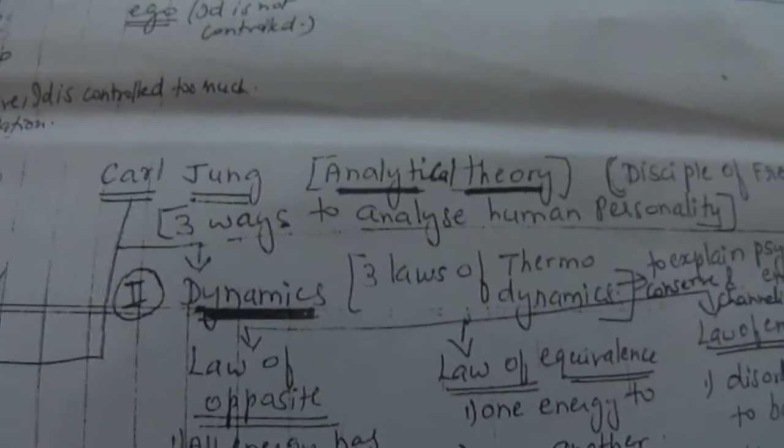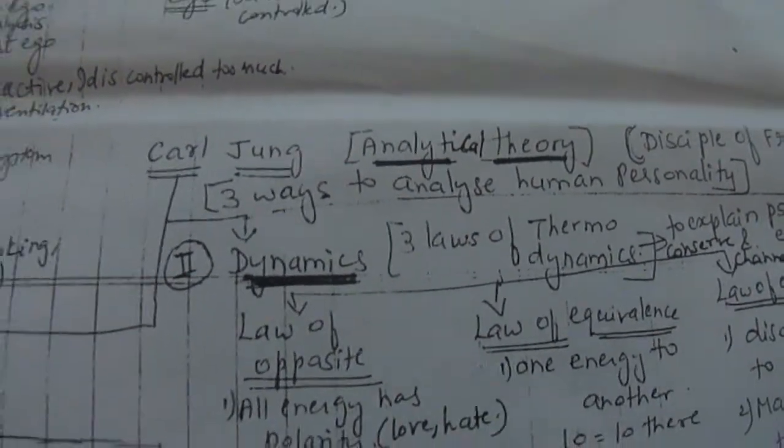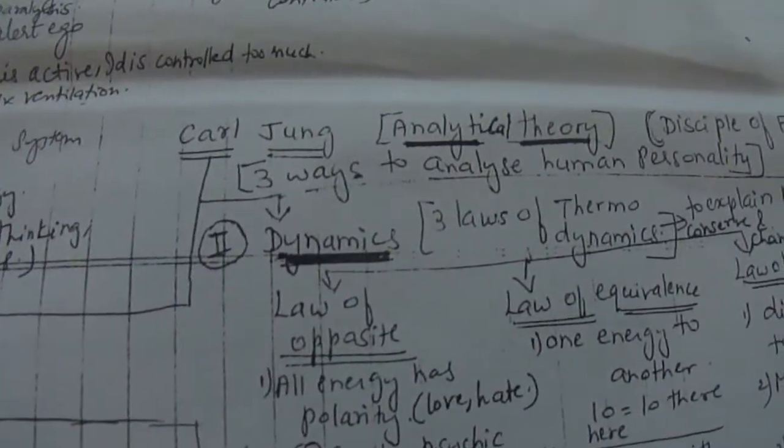Carl Jung's Analytical Theory. Again briefly we will go through. It is divided into three ways to analyze human personality.